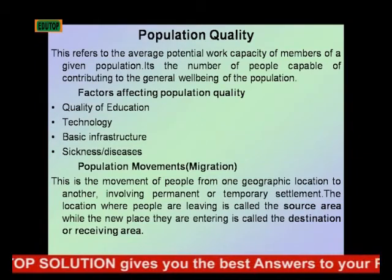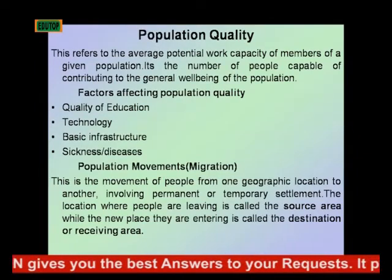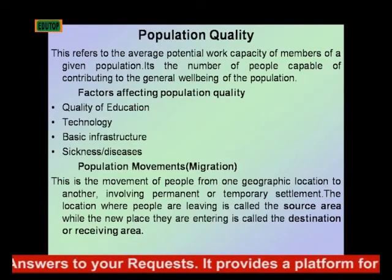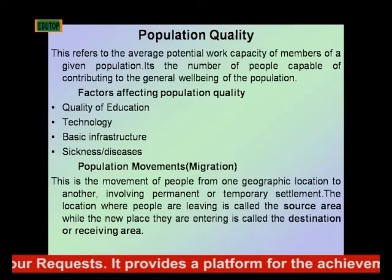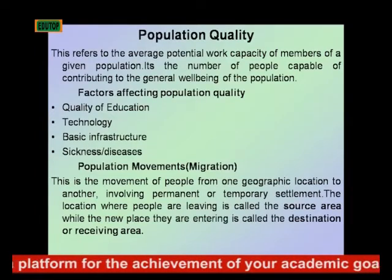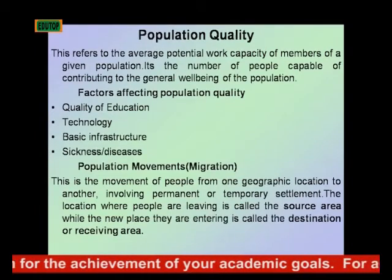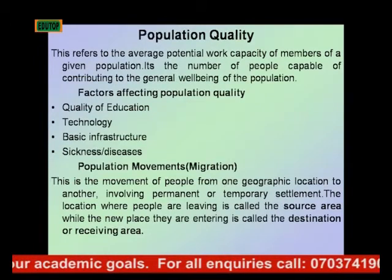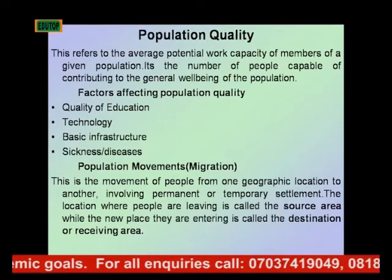Now let's consider population quality. This refers to the average potential work capacity of members of a given population — that is, the number of people capable of contributing to the general well-being or progress of the population. Seven factors contribute to the quality of a given population.